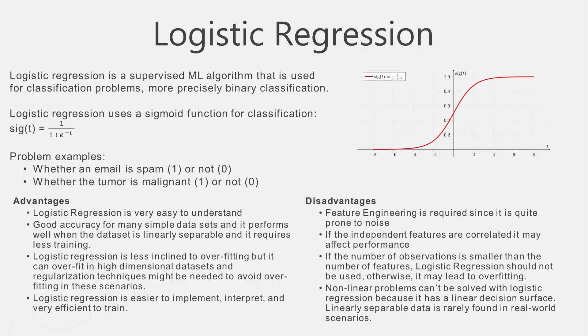Logistic regression is a supervised learning machine learning model that is used in classification problems where there are only two classes, and it performs the classification by applying the sigmoid function, for which the formula is: 1 over 1 plus e to the power of minus t. Examples of such problems are spam email filtering or classification of a tumor as malignant or benign.